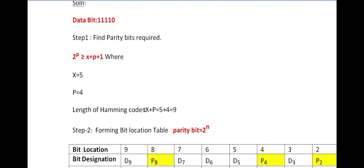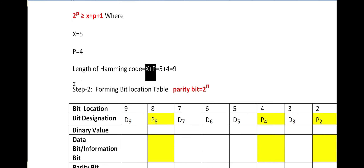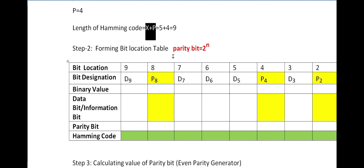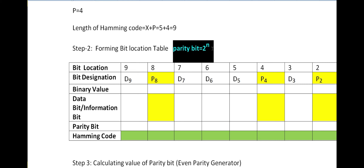The length of the hamming code is given by x + p. With x = 5 and p = 4, the length is 5 + 4 = 9. Moving to Step 2, we form the bit location table. The parity bit positions are powers of 2: 2^0, 2^1, 2^2, 2^3, and so on.